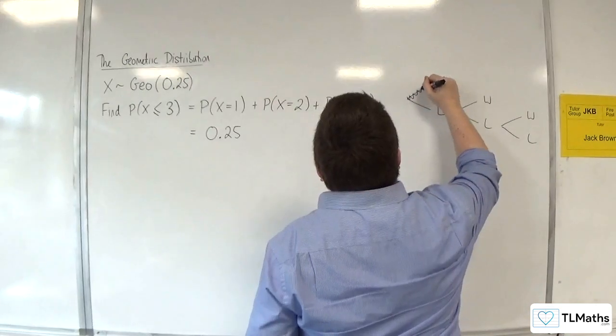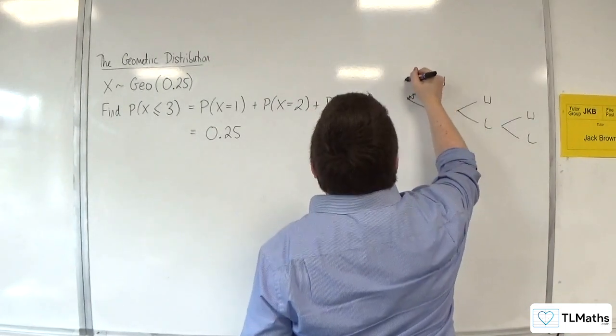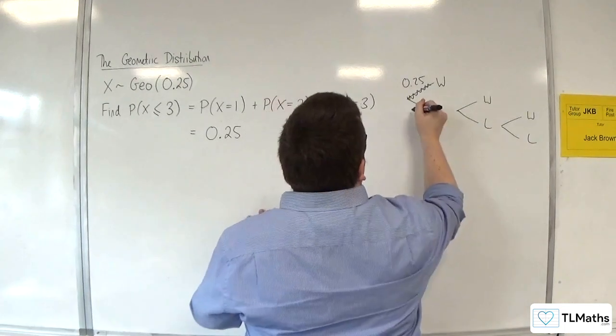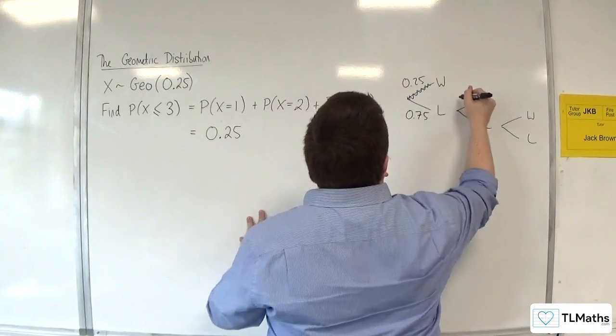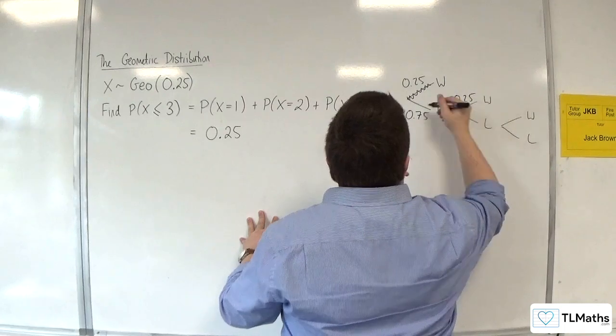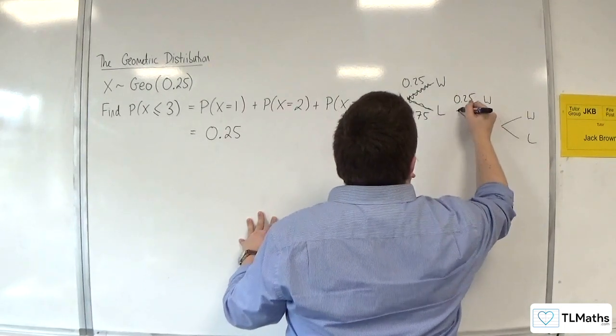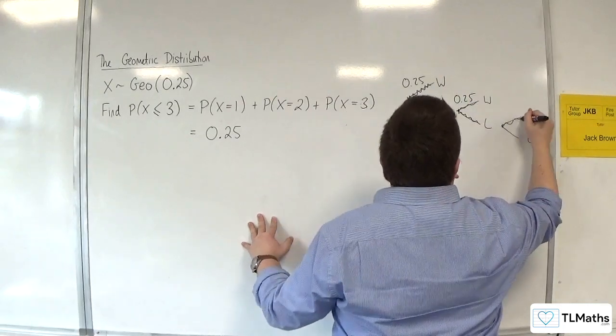This is the probability that I win on the first attempt. That's 0.25. Or I lose and then win. Or I lose, then lose, then win.